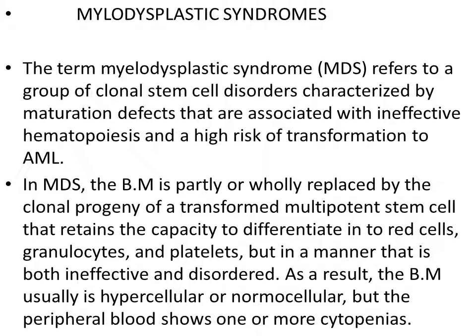These cells are not maturing normally and are associated with ineffective hematopoiesis. They are maturing within the bone marrow but also dying within the bone marrow — they are not coming into the peripheral blood. This is ineffective hematopoiesis. And in these patients, there is a very high risk of transformation to acute myeloid leukemia, to frank leukemia.